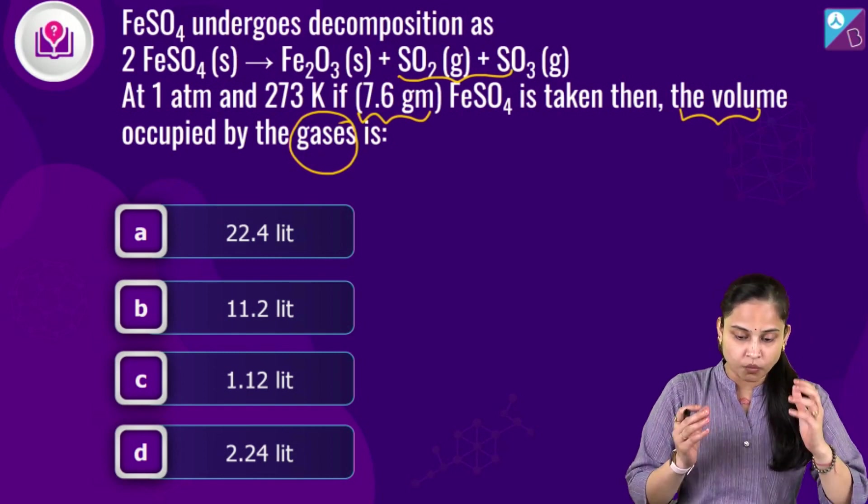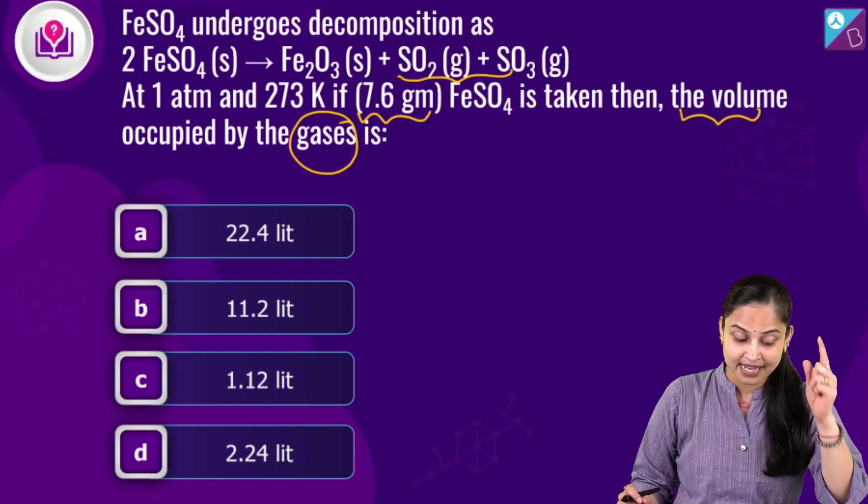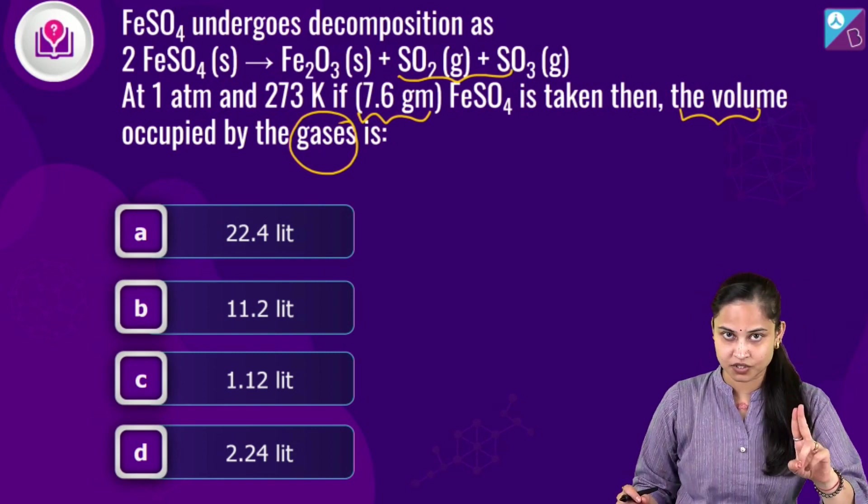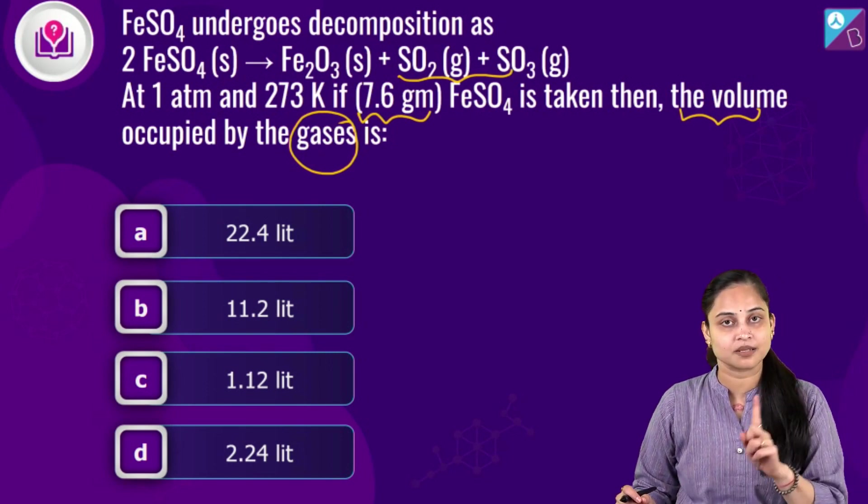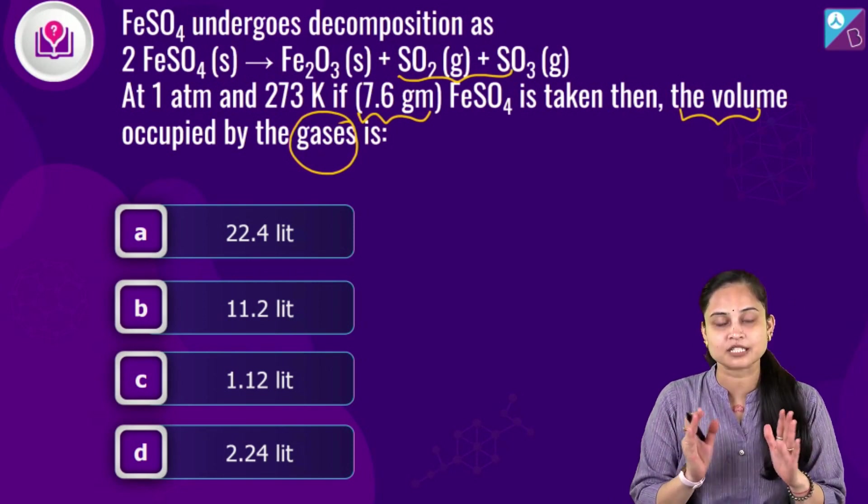So over here, what we need to calculate out is the volume occupied by the gases at standard conditions, 1 atm pressure and the temperature is 273 Kelvin. That is what we need to find out.